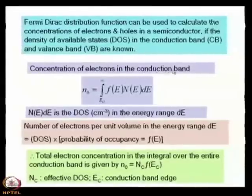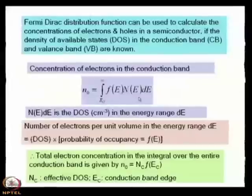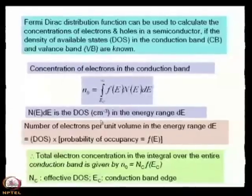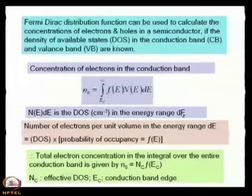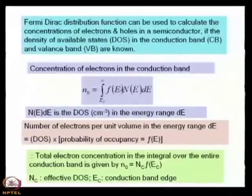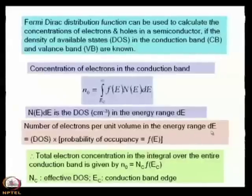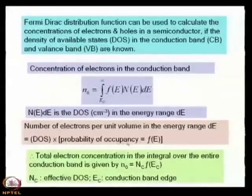The concentration of electrons in the conduction band can be given by N₀ = ∫(E_c to ∞) f(E) n(E) dE. What is n(E) dE? n(E) dE is the density of states, with units of per cubic centimeter, in the energy range dE — that is, between E and E + dE. The number of electrons per unit volume in the energy range dE is given by the density of states multiplied by the probability of occupancy.